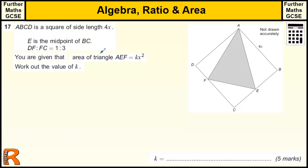Okay, so we're given some information about a square whose side is 4x, and that E is the midpoint of BC, so that tells us this is 2x and this is 2x.